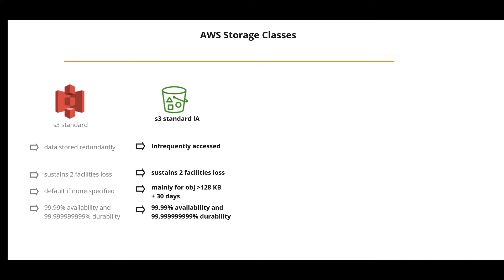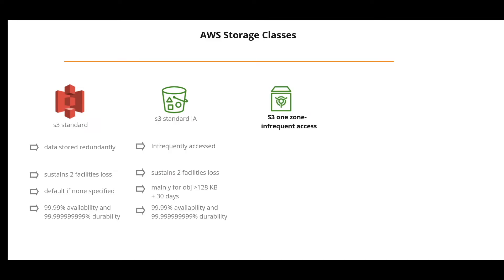S3 Standard is designed for 99.99% availability and 99.999999999% durability. Next is Standard Infrequent Access, used when data is accessed less frequently but requires rapid access. It has a lower fee than S3 Standard but charges a retrieval fee. It is designed to sustain the loss of two facilities concurrently, and is mainly used for larger objects (greater than 128 KB) kept for at least 30 days. It provides the same availability and durability percentages as S3 Standard.